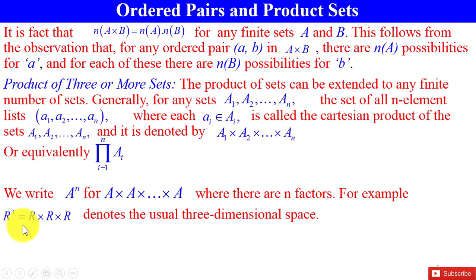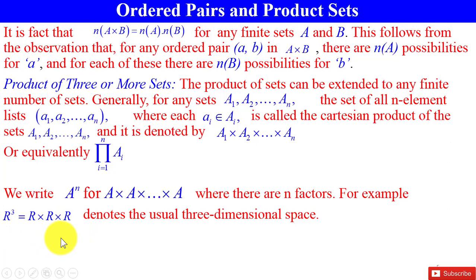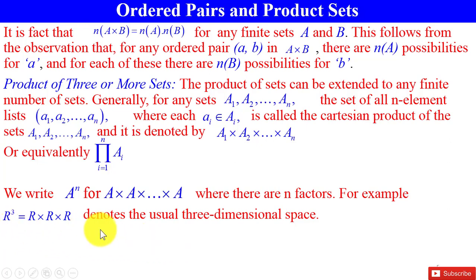We write Aⁿ for A×A×...×A (n times), where there are n factors. For example, R³ = R×R×R, and R² = R×R. R³ denotes the usual three-dimensional space.